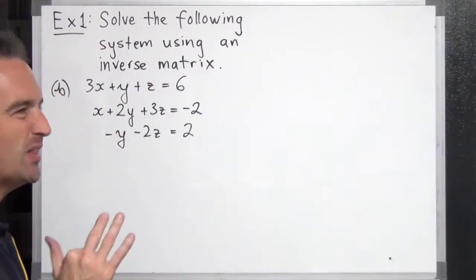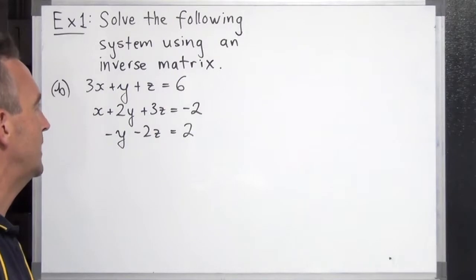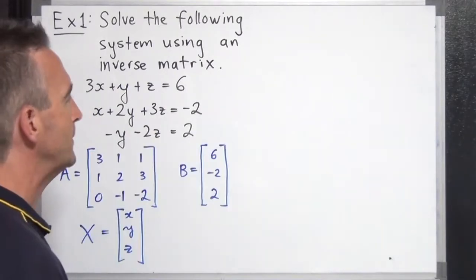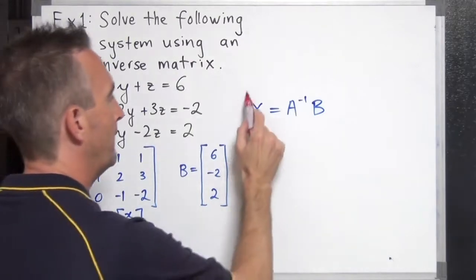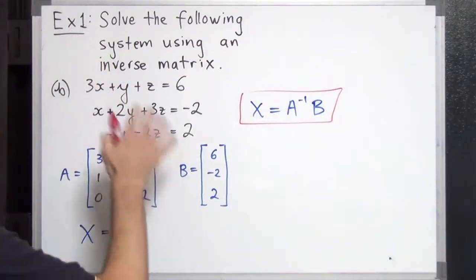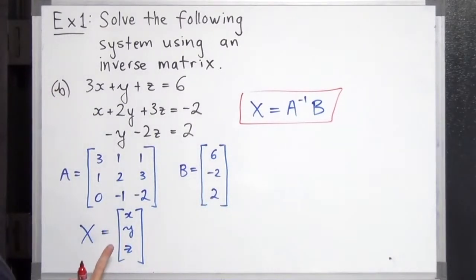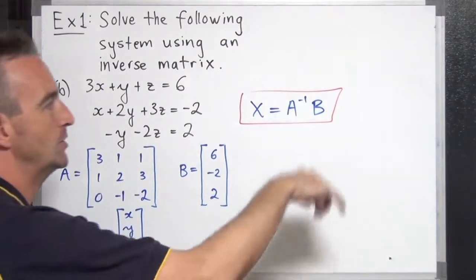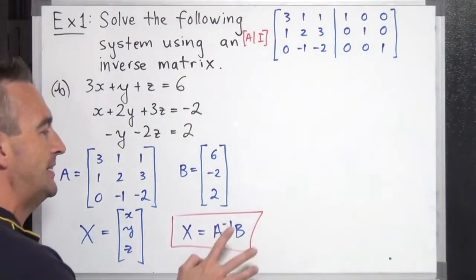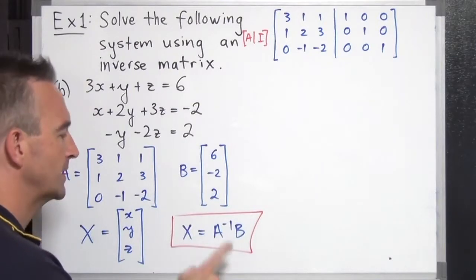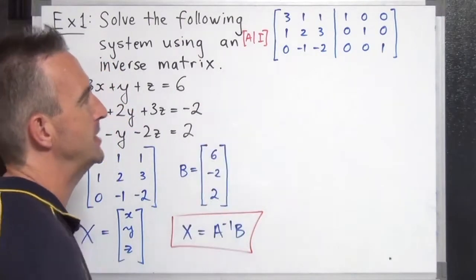Now let's try Example 1B — a 3 by 3 system. We've got three equations with three unknowns here. Let's establish our matrices A, B, and X. Our solution is going to be matrix X equals the inverse of A times B. We have our coefficient matrix A, our matrix of constants B, and our matrix of variables X. We're going to find the inverse of A to solve for X — in other words, to find x, y, and z. Since we don't have a formula this time, we'll use Gauss-Jordan elimination. There's our augmented matrix — let's get into it.